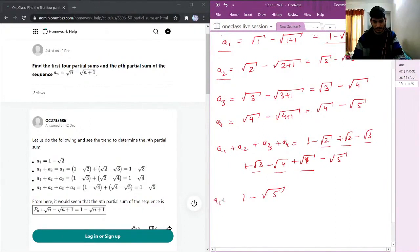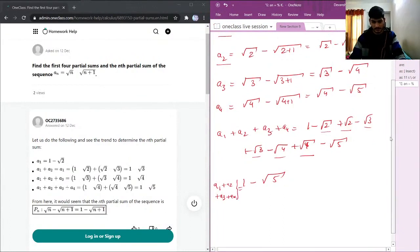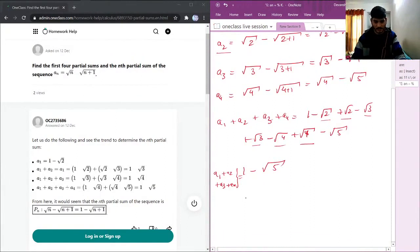Given S1, S2, S3 plus S4 equals square root of 4, we can clearly see that for P_n, this is 1 minus square root of n plus 1.